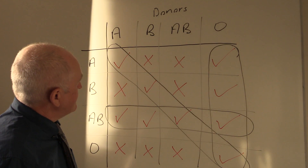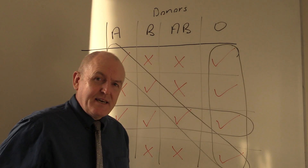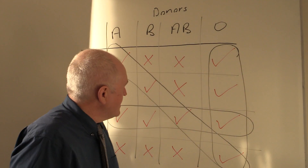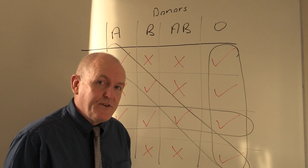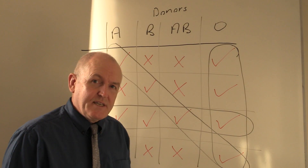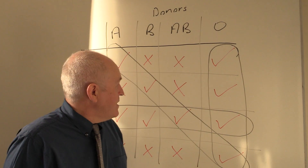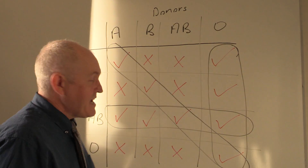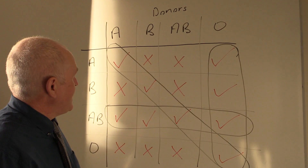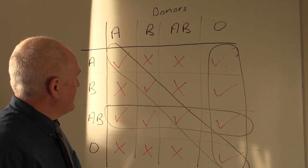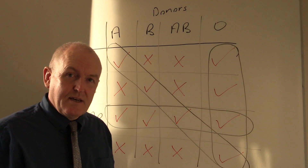We would only use this type of thinking clinically in an absolute emergency. Normally the hematology laboratories will check for many different blood groupings in addition to the ABO Rhesus system. But this shows where you'll get the ABO hemolytic type mismatch reactions and which transfusions are theoretically acceptable.